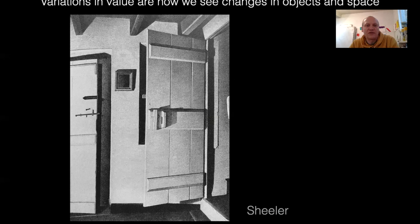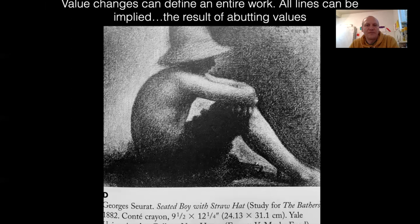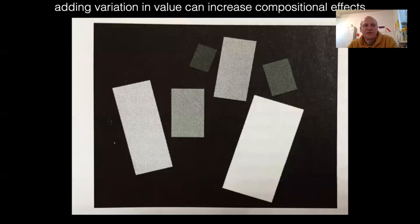You can see lots of variations in gray, like on the door surface. Here we get abutting values again. Value is showing us where the light source is — the light is hitting the arms and the shins, so we can tell the light source is up and to the right. Things in the back get darker, so we can tell all that is in shadow, and we get this implied form — the three-dimensionality of the curving of the figure.